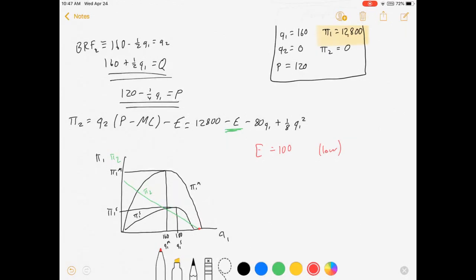Firm 2's profits now are 12,700 minus 80Q minus 1 eighth Q1 squared. You can use Wolfram Alpha if you want to. You can review your quadratic formula if you want to. But what you're going to do is you're going to set their profit equal to 0 and solve for Q1. If the entry costs are low, in this case 100, it's possible to deter entry. The Q1 that sets firm 2's profits equal to 0 is 291 point something.